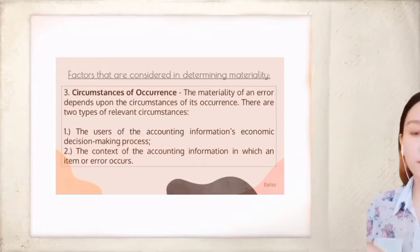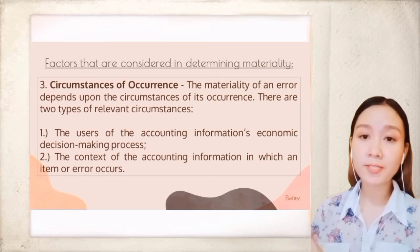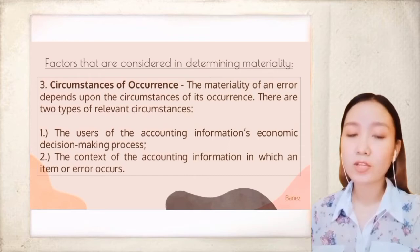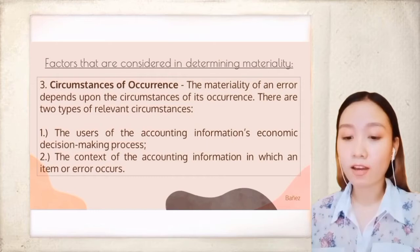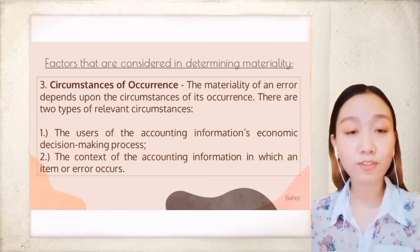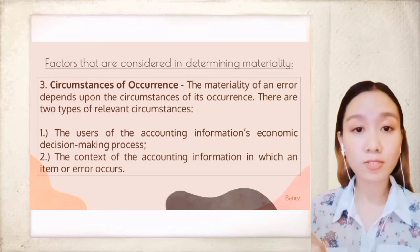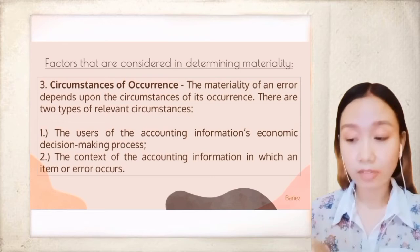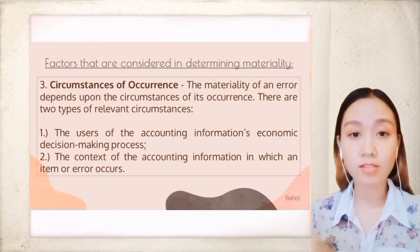Circumstances of occurrence: the materiality of an error depends upon the circumstances of its occurrence. There are two types of relevant circumstances. The first is the users' economic decision-making process. Since materiality means the impact on user decisions, the auditor must have knowledge of the likely users of the financial statements and their decision process. For example, if the primary users are creditors, the auditor can assign a low materiality threshold to items on the financial statements that affect liquidity, such as current assets and current liabilities.